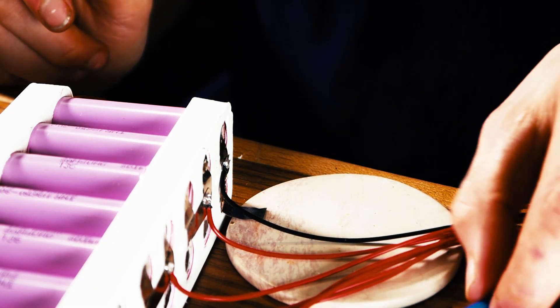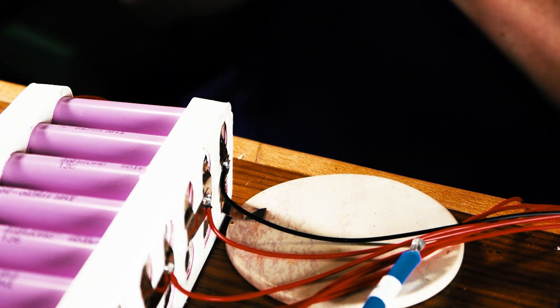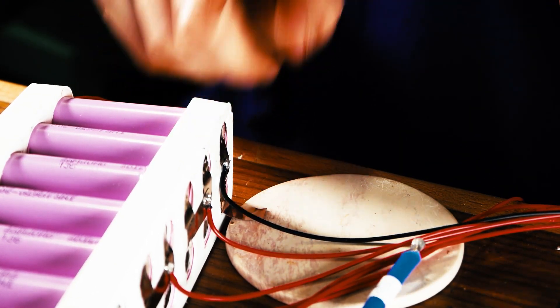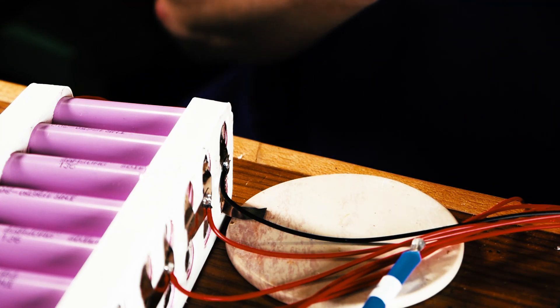Now you're ready to solder the B plus wire of the BMS onto the battery. This solders on the first negative of the battery pack, the same place as the first black wire.